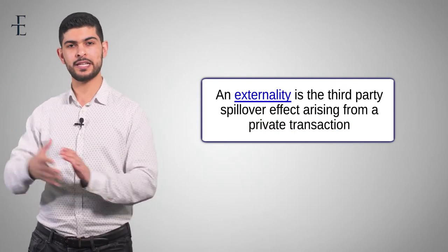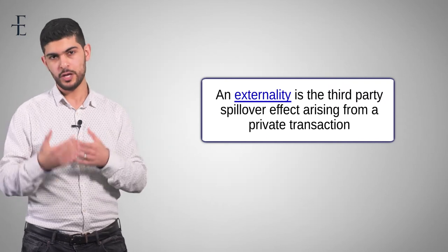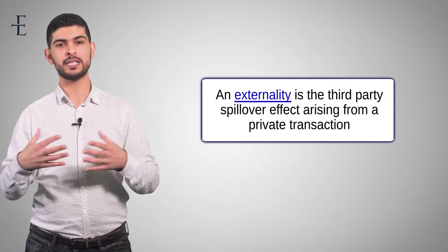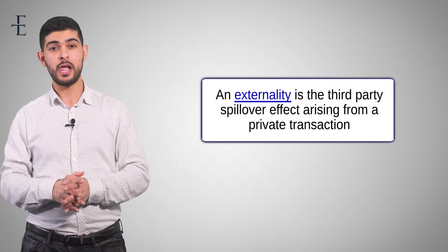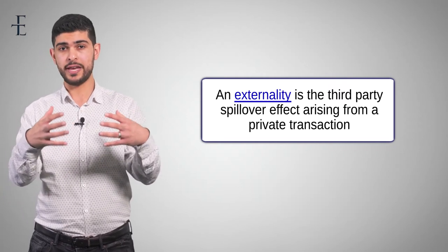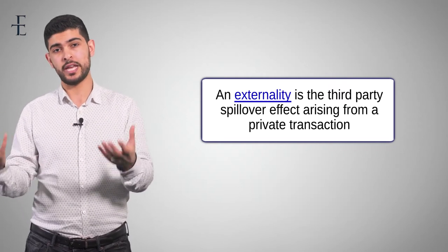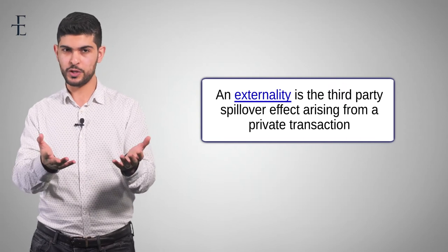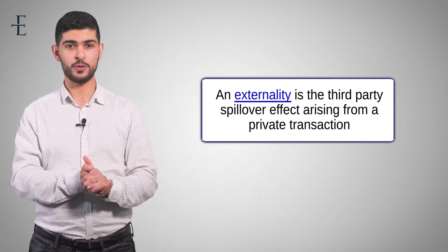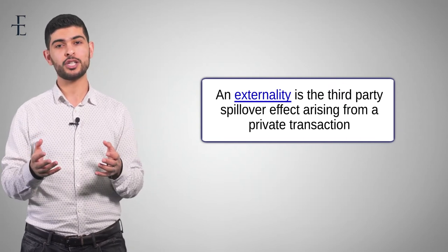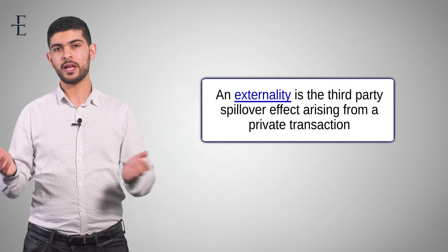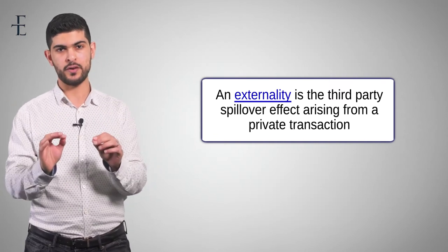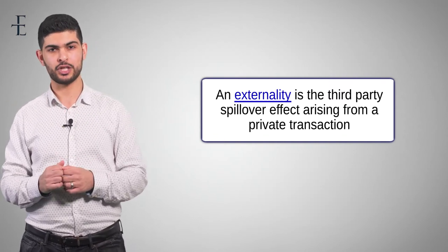In our second example, who's the third party? Well, you — the individual who walks by and passively smokes. And you could argue beyond that the NHS, because the NHS isn't just treating the smoker; they're now treating you, the passive smoker, as well. And the private transaction? That individual buying and consuming the cigarette — that is the private transaction. So that's our starting point.